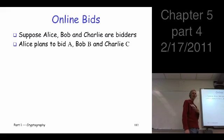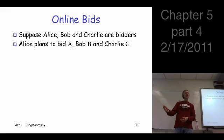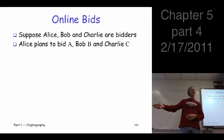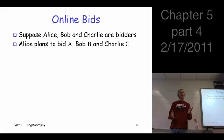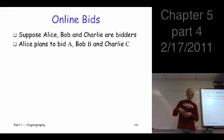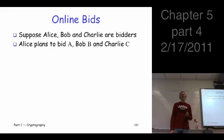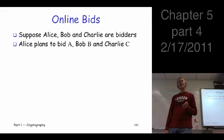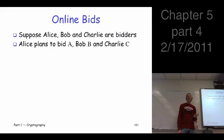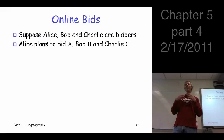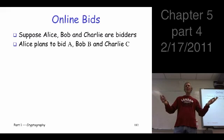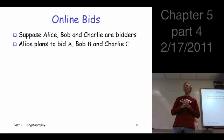Suppose Alice bids A dollars, Bob bids B, Charlie bids C. Now if you're Alice, do you want to be the first one to submit your bid? The biggest chances are to submit last. The idea is: I'm the auctioneer, you can trust me — you send me your bids, and once I receive all of them, I'll post them online. So nobody gets an unfair advantage.